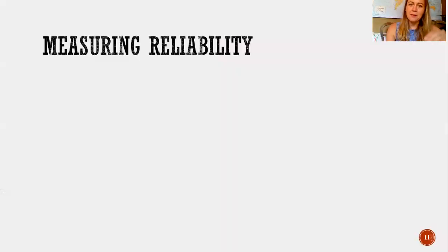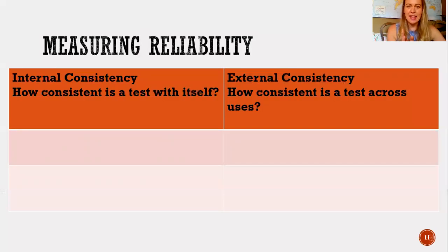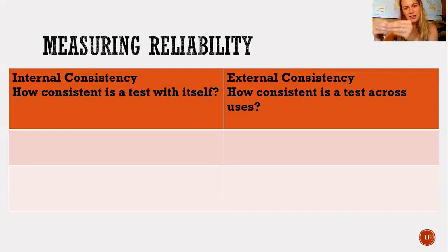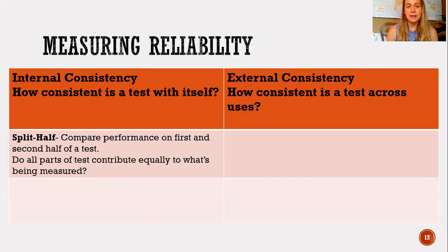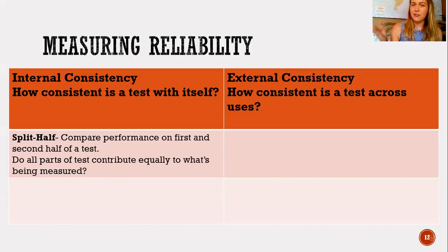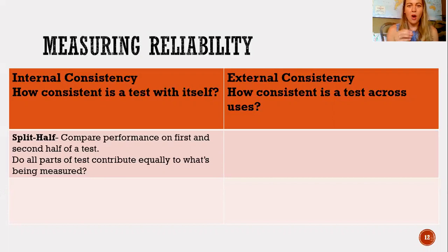You can actually measure how reliable a measurement procedure is, and there are three different ways to do this, broken into two categories: internal consistency and external consistency. For internal consistency, the method is called the split-half procedure. We administer a test and compare people's performance across different items to see if they're related. For example, if we all did IQtest.com, we would look to see if scores on odd-numbered items were similar to scores on even-numbered items. A strong positive correlation would indicate high internal consistency, showing that all questions are contributing to measuring the construct of intelligence.